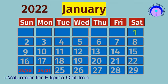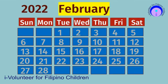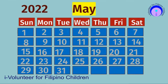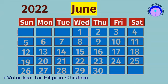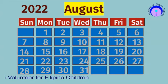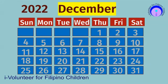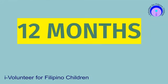This is the calendar for the year 2022. It starts from January and ends in December. Before discussing the calendar, we might as well discuss the 12 months of the year.